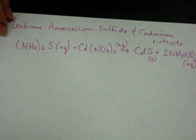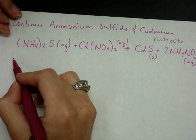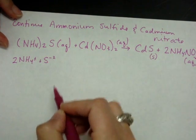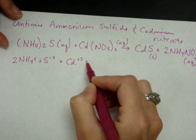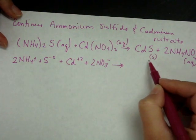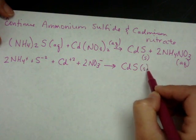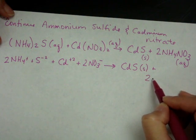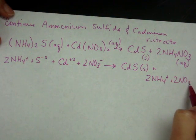At this point, we can split our ionic forms or our aqueous forms into their ions. So we get two NH4 plus, plus S minus two. This is also aqueous. So cadmium plus two, plus two nitrate ions yields. Cadmium sulfide is a solid, so it's going to stay together. And then we're going to have the ammonium nitrate split as well. So I'm going to write this below. Two NH4 plus, plus two NO3 minus.